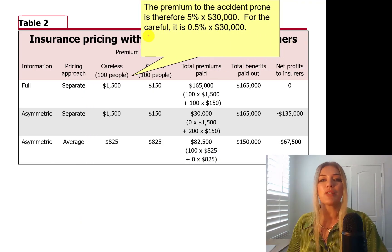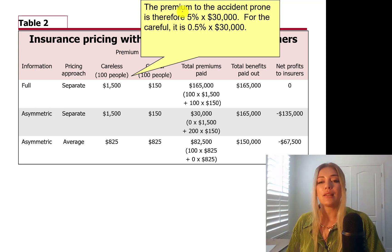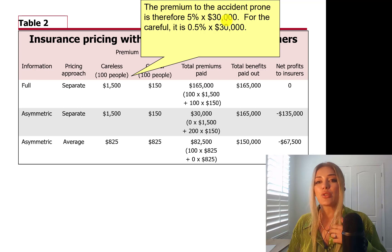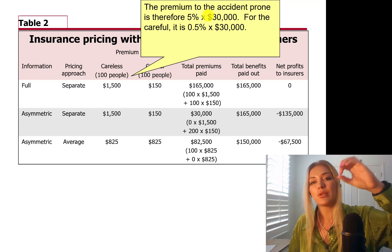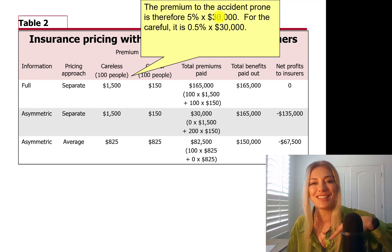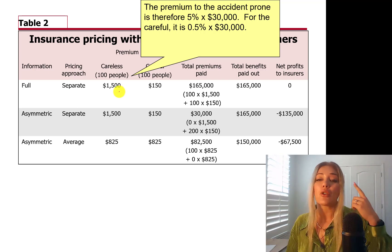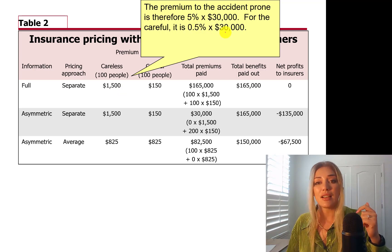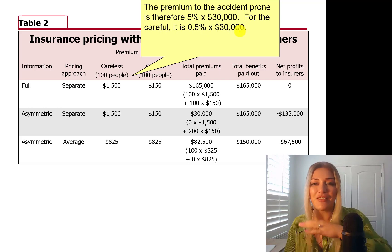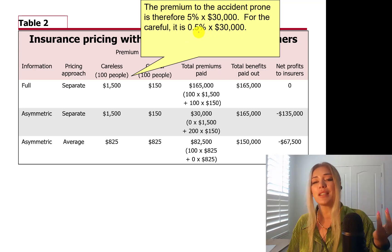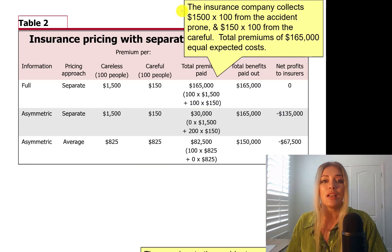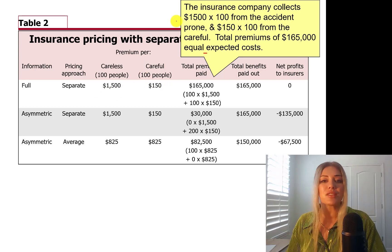Let's look at the premium for accident-prone and careful people. The premium for accident-prone is 5% times $30,000, which equals $1,500 — that's the actuarially fair insurance premium for careless people. For careful people, the probability is 0.5% times $30,000, which equals $150. So careless people pay $1,500 and careful people pay $150.